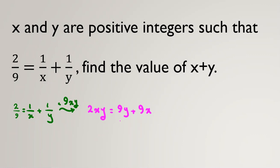After that, we take all things to one side, for example, the left-hand side. Then we have 2xy - 9y - 9x = 0.